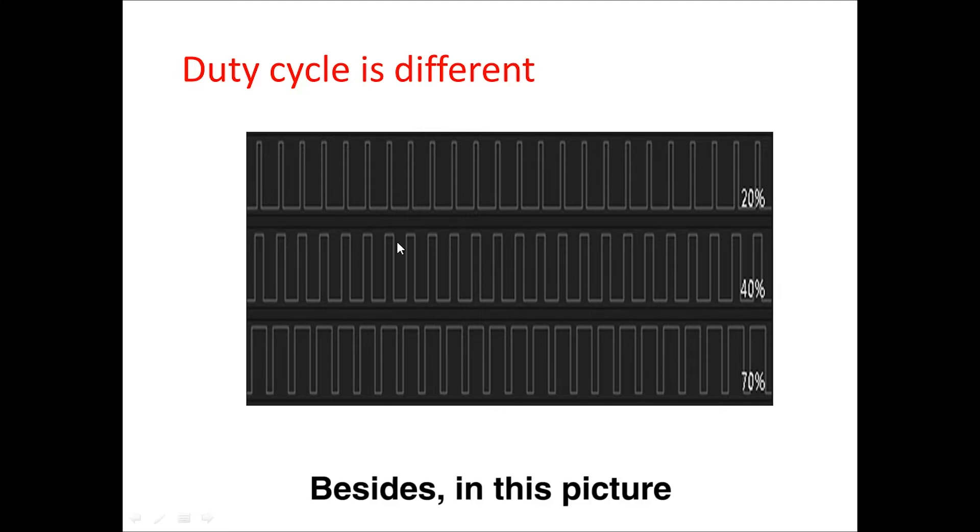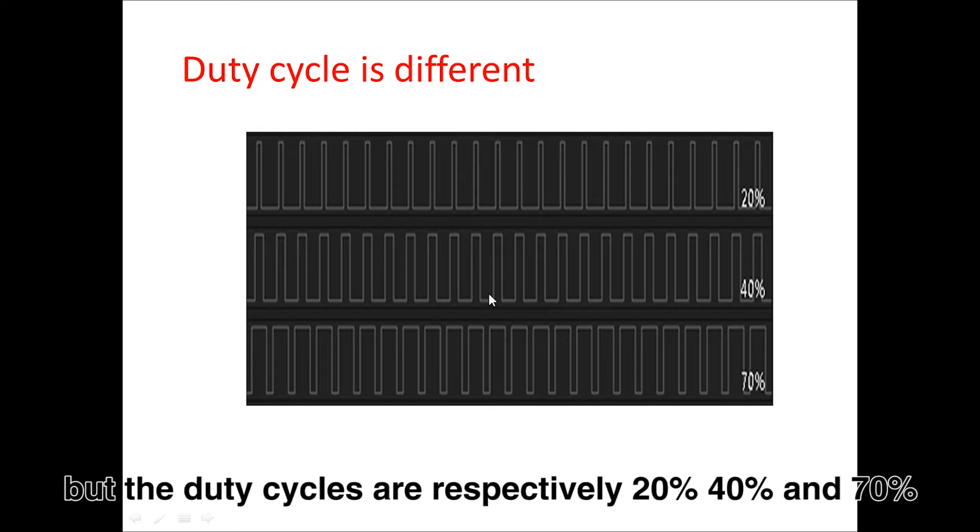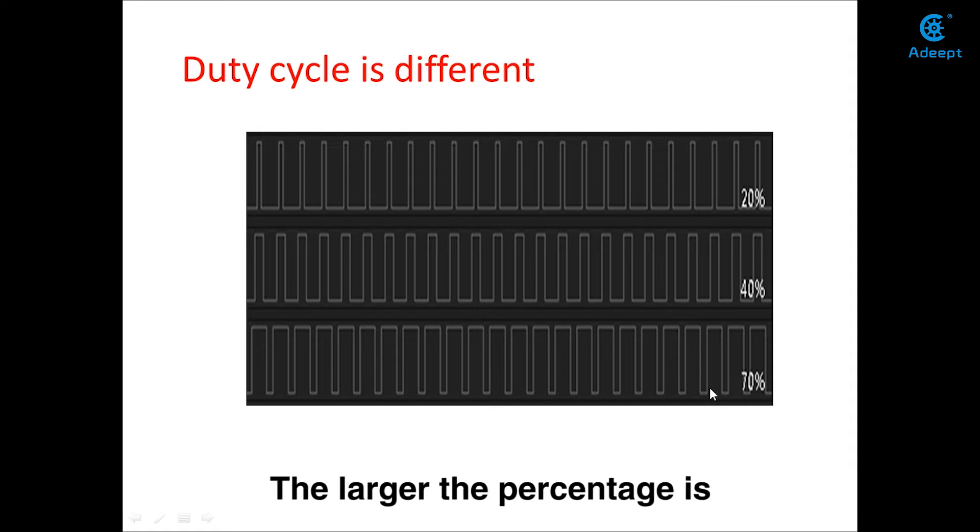Besides, in this picture, the cycle of these three waveforms is the same, but the duty cycles are respectively 20%, 30%, and 70%. The larger the percentage is, the larger the analog voltage value corresponding to the waveforms will be.